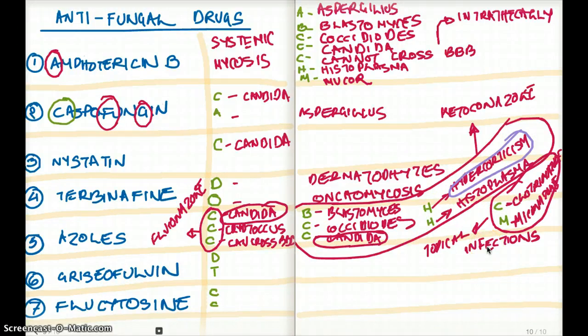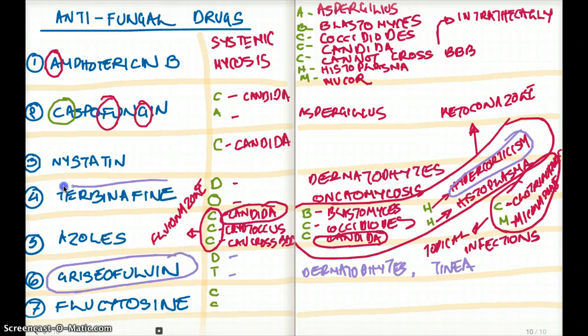Now those are my azoles. Moving on to griseofulvin. Remember griseofulvin, that's the one which inhibits the microtubules. And we use it for dermatophytis. The D for dermatophytis. And T is for tinea, ringworm. So you see that we have two drugs so far for dermatophytis. There is the terbinafine and griseofulvin kind of falls in the same category. Terbinafine acts at the level of squalene to lanosterol. And griseofulvin works at the level of microtubules.